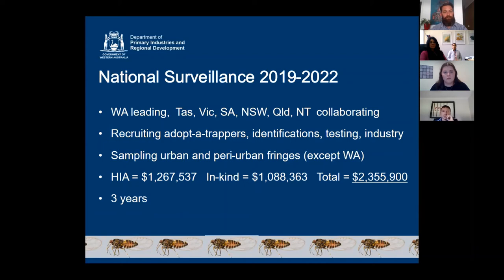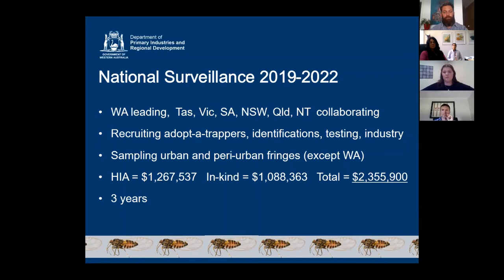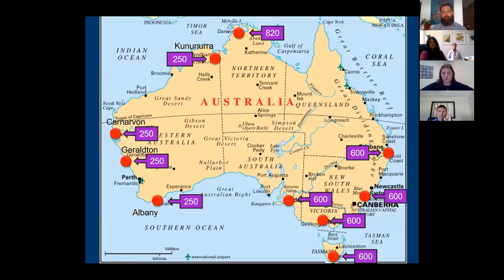We are complementing existing TPP surveillance. As was the case in Western Australia when we found TPP, it came in through the metropolitan area. So if it's going to arrive in other states and territories, it's most likely to turn up in gardens within their capital cities. This project therefore focuses on the urban and peri-urban areas of capital cities, except WA where surveillance is already occurring in Perth. Here in WA, we're looking at regional centres important for horticulture. The project is mostly funded by HIA — Hort Innovation Australia — with in-kind contributions from all states and territories. It runs for three years, beginning in August 2019.